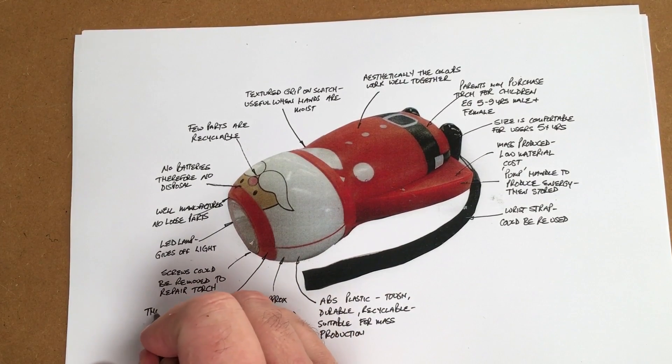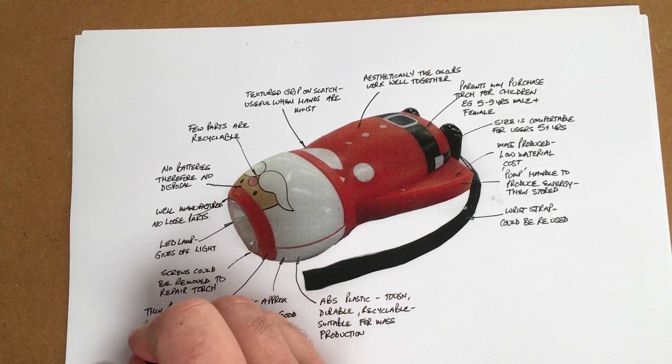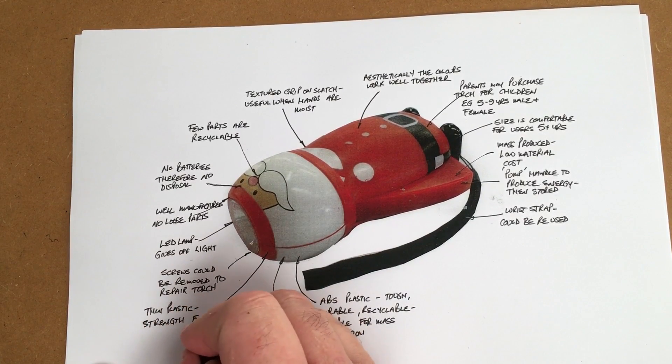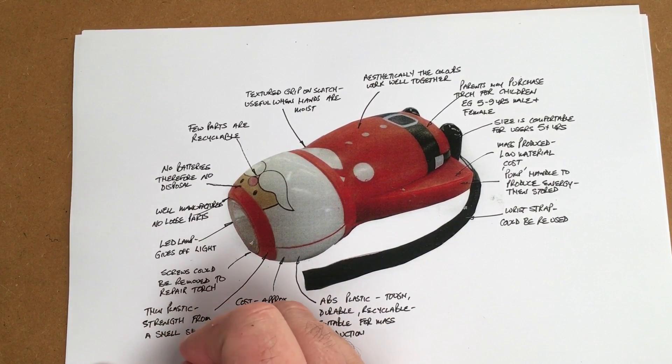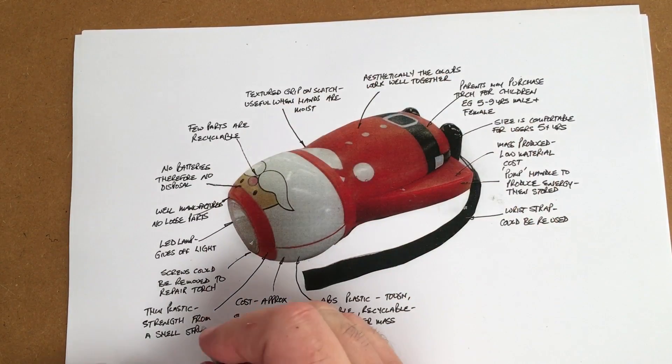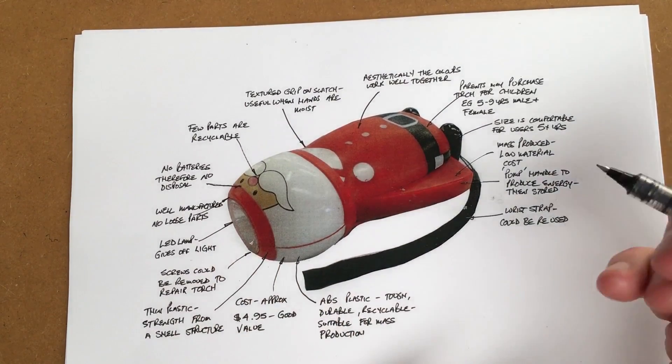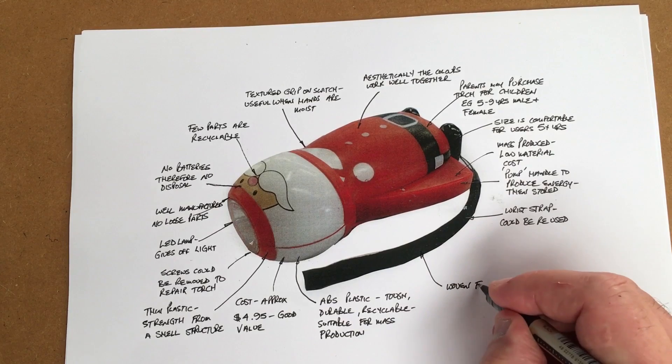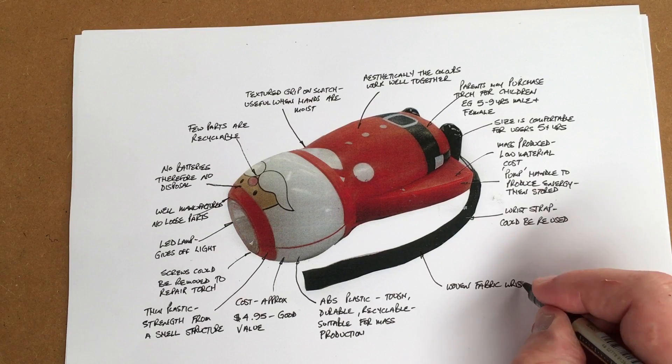I could also say that this is a thin plastic, so it's not using much material. That's good environmentally. The strength in this is from a shell structure. So a bit like an egg, this is a thin plastic and it gets its strength from the actual fact that it's a shell. I could add here that this is a woven fabric wrist band, and that's comfortable.